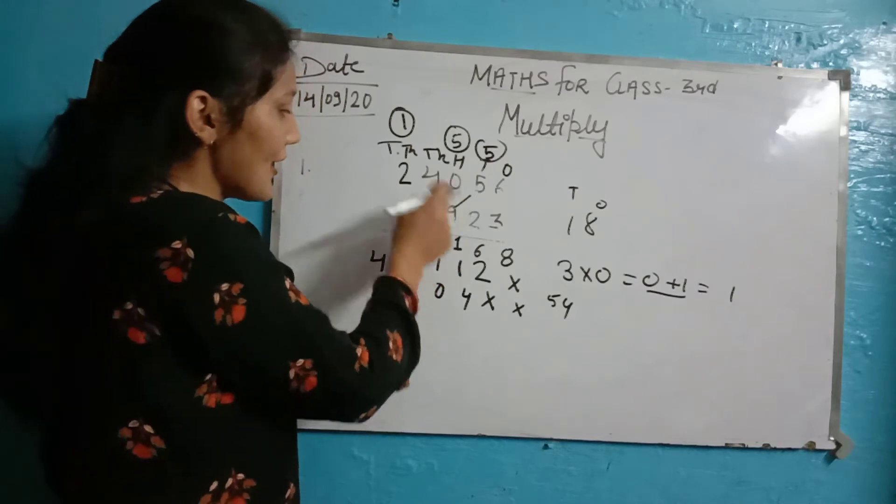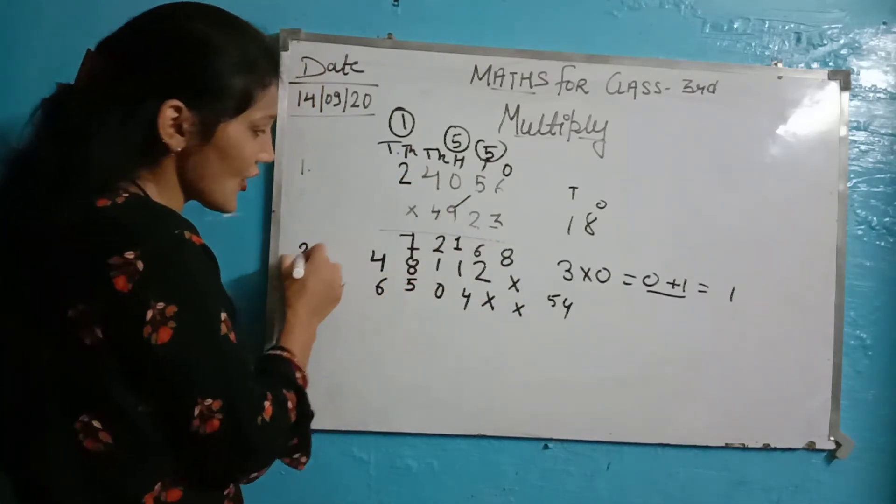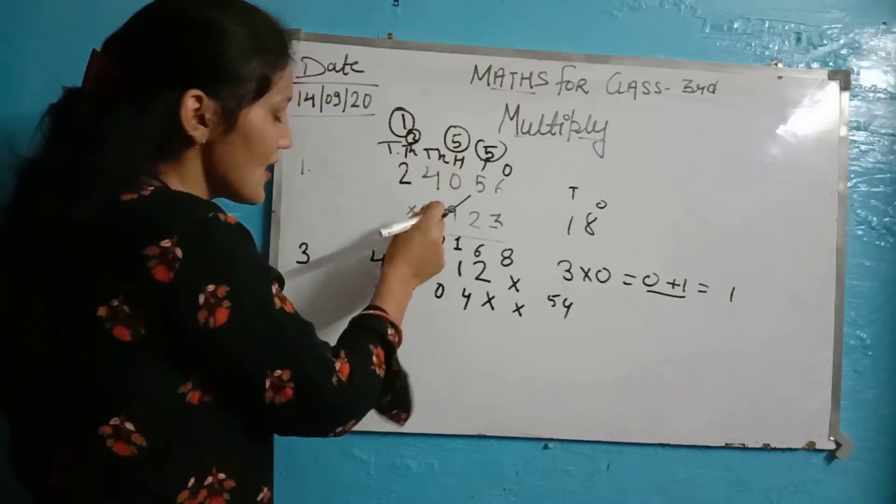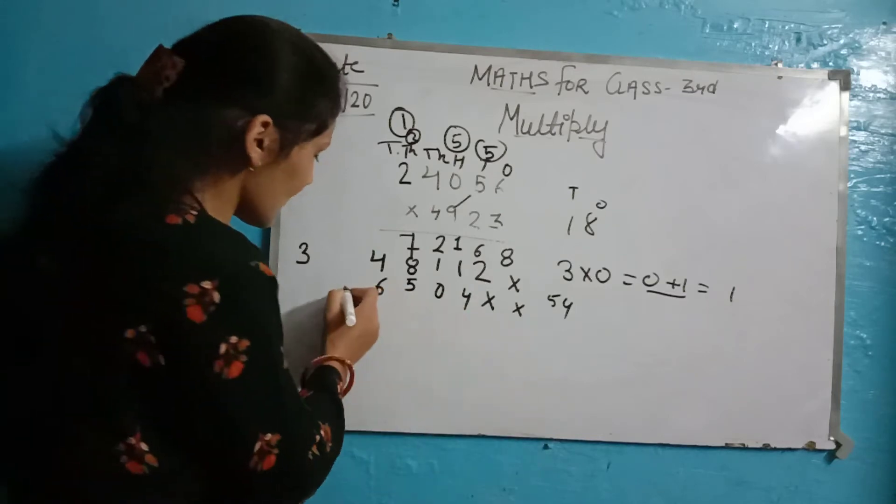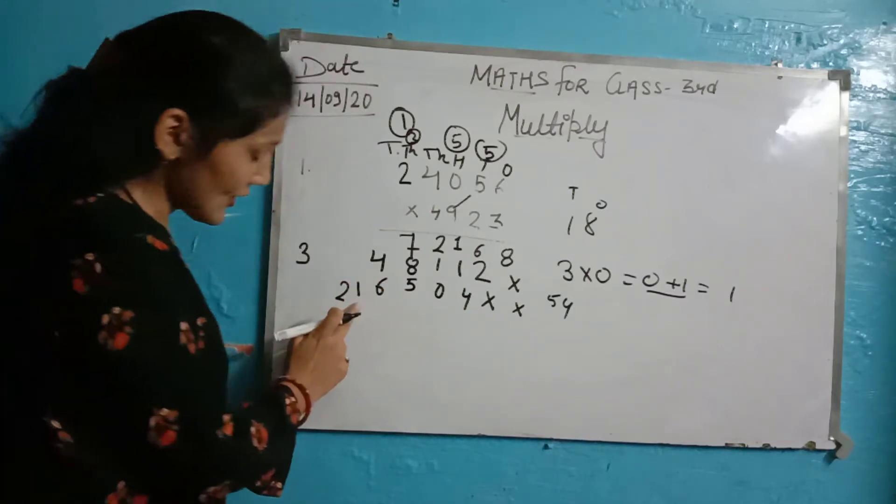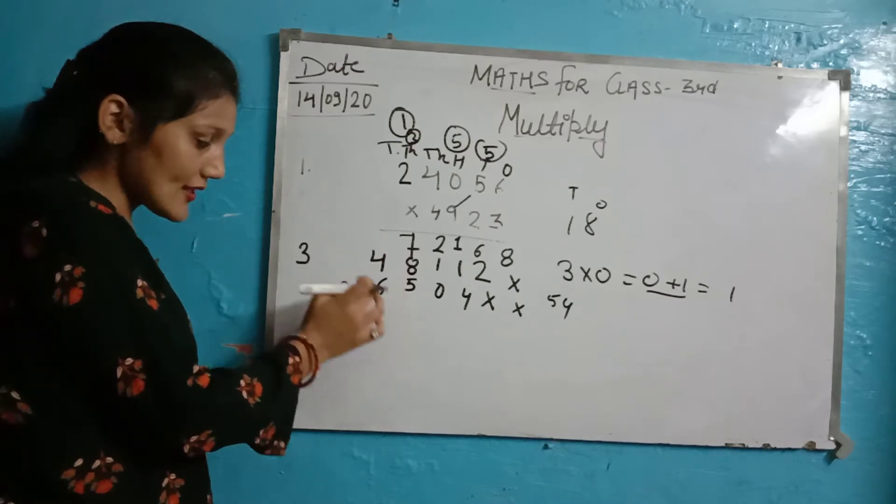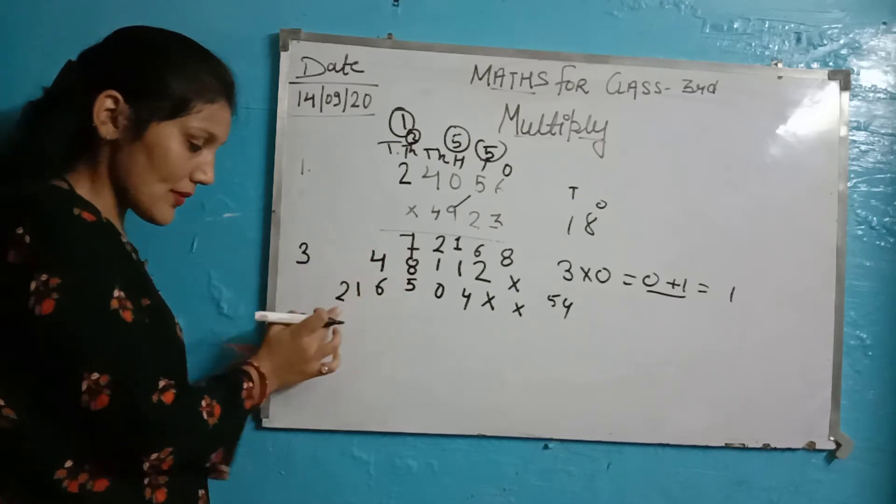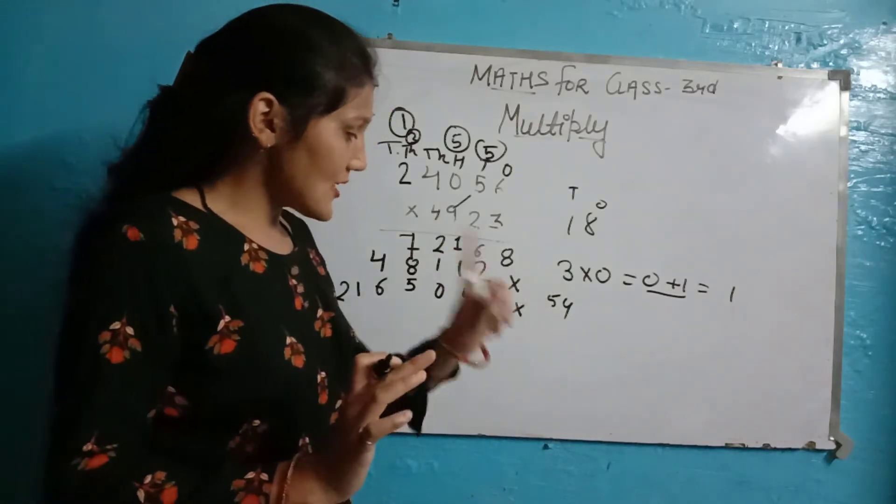Nine times four, 36. We write 6, and 3 carry. Nine times 2 equals 18, 18 plus 3 equals 21. We write 1 here and 2 carry. You will write it completely clean - ones place, tens and hundreds.